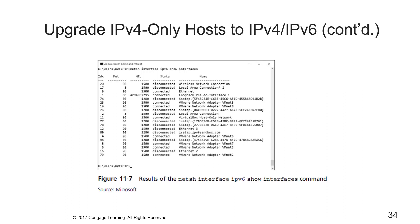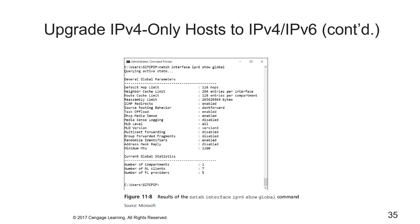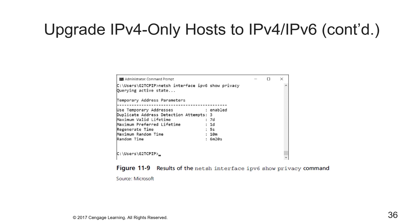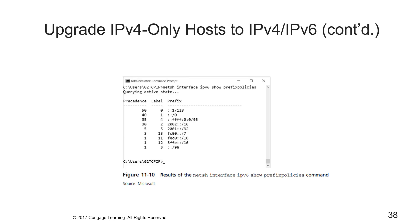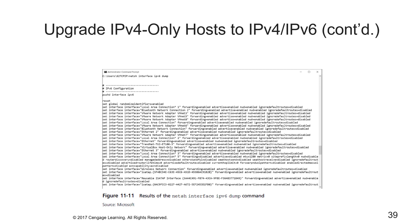Using the NetShell interface, the 'ipv6 show address' command is one of the tools you'll use. Here are the results of running that command, the 'show interfaces' command, the 'show global' command, and the 'show privacy' command. If you need to change the policy table that controls the order of selection, create configuration files and scripts that can be run on similar hosts. Here's another example showing the NetShell 'show prefix policies' output and the 'ipv6 dump' command.